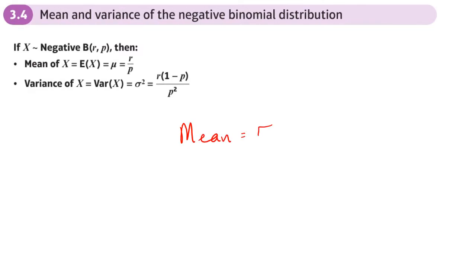E(X) of our negative binomial distribution is r over p. Now compare that to the mean of a geometric distribution - that was one over p, wasn't it? So if you took that and times it by r, you get that.